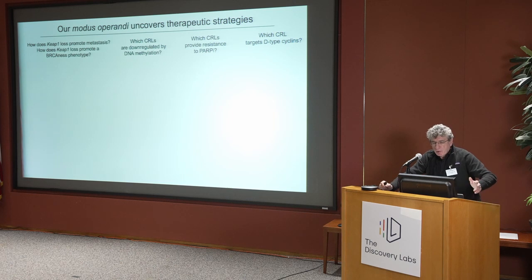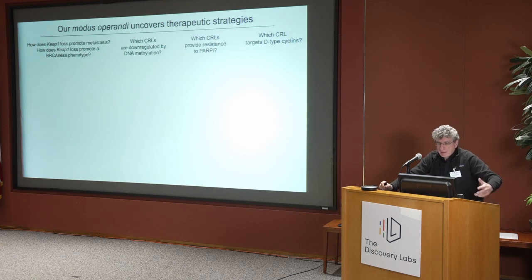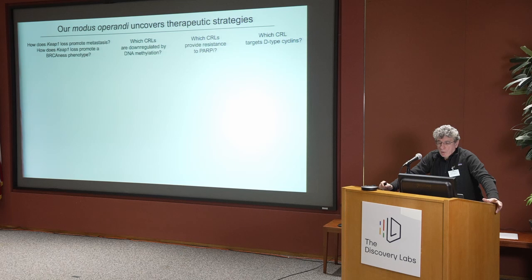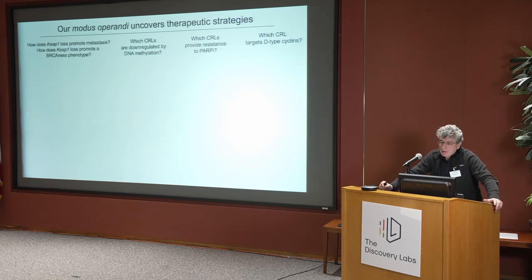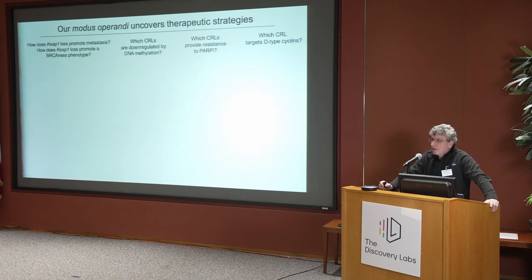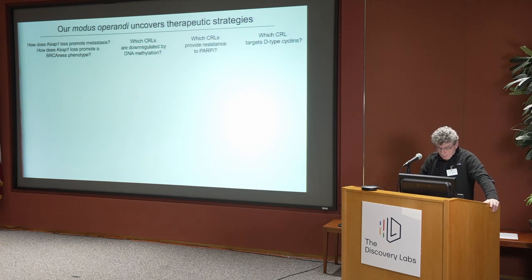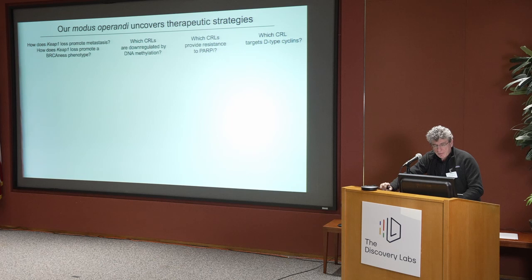Another postdoc asked: which CRLs are downregulated by DNA methylation, suggesting that they might be tumor suppressors? Which CRLs provide resistance to PARP inhibitors? And finally — a very basic question — which CRL targets D-type cyclins for degradation? These are questions that different postdocs asked in the lab in the last few years.